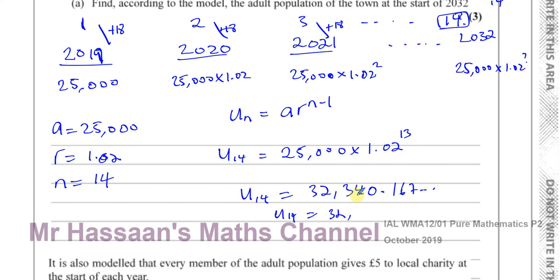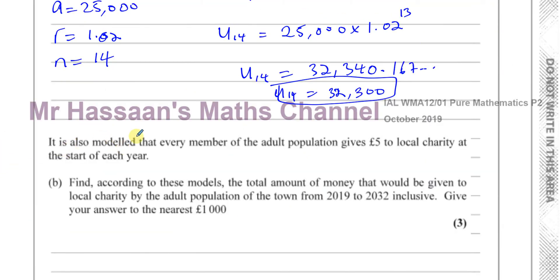Part B states it is also modelled that every member of the adult population gives five pounds to local charity at the start of each year. Find, according to these models, the total amount of money given to local charity by the adult population from 2019 to 2032 inclusive.